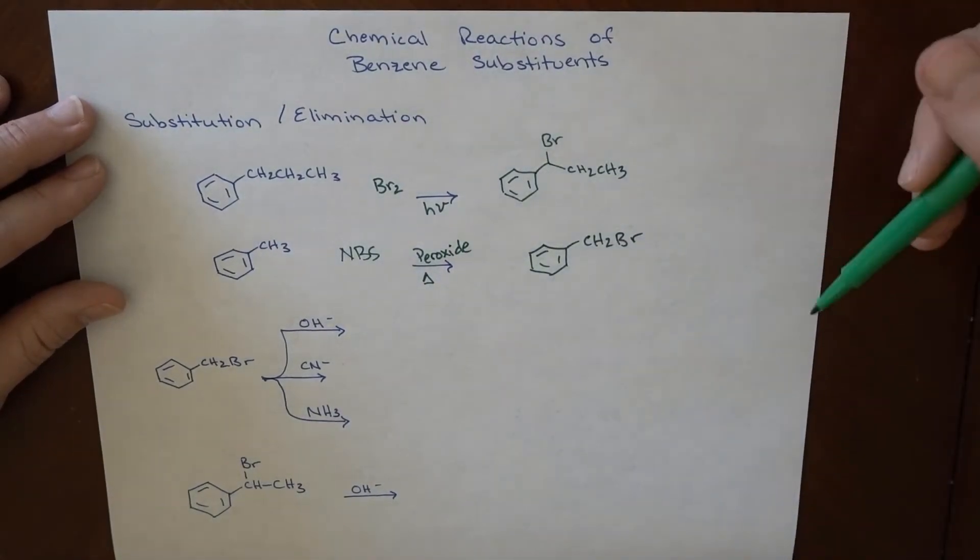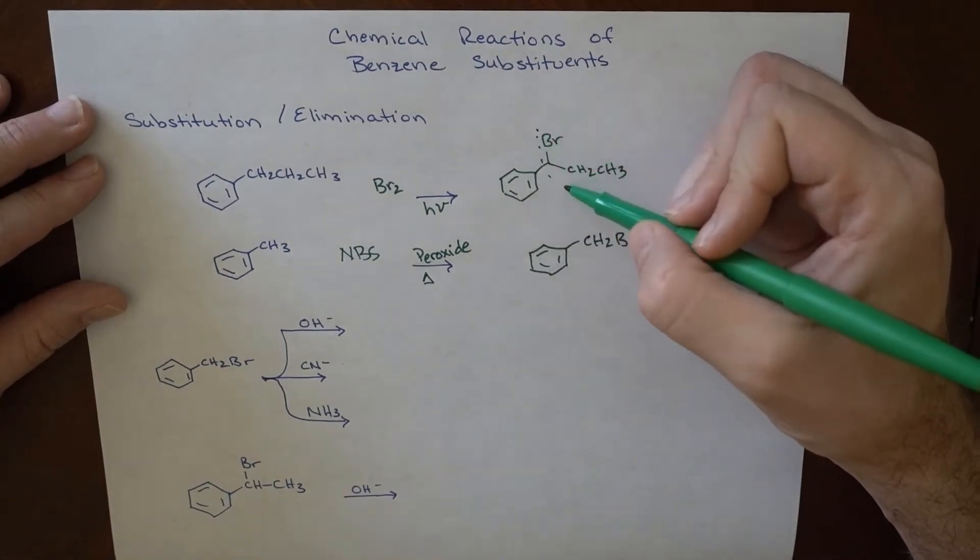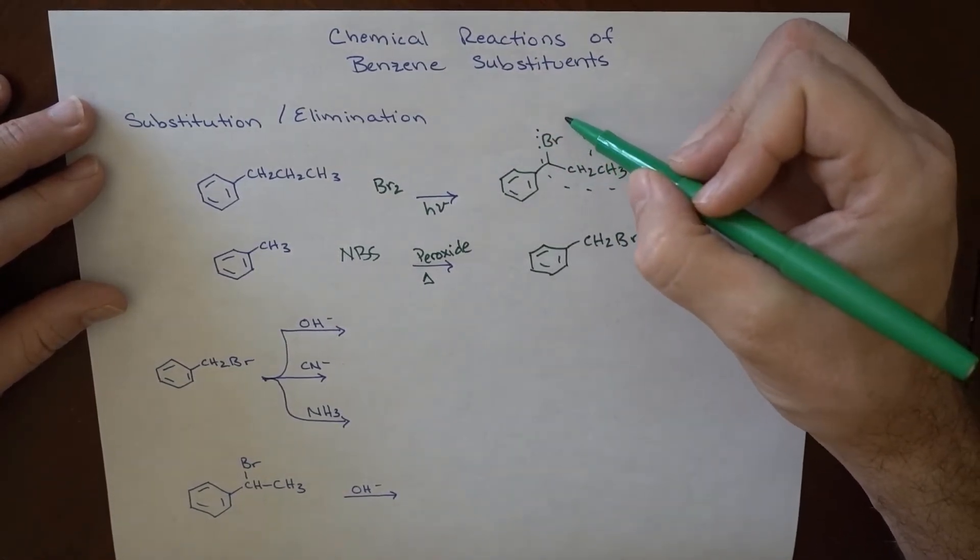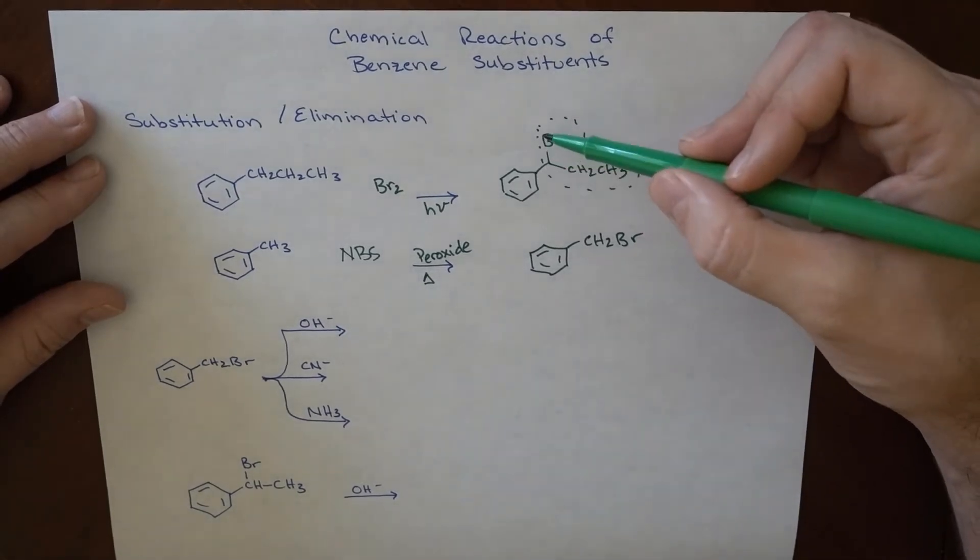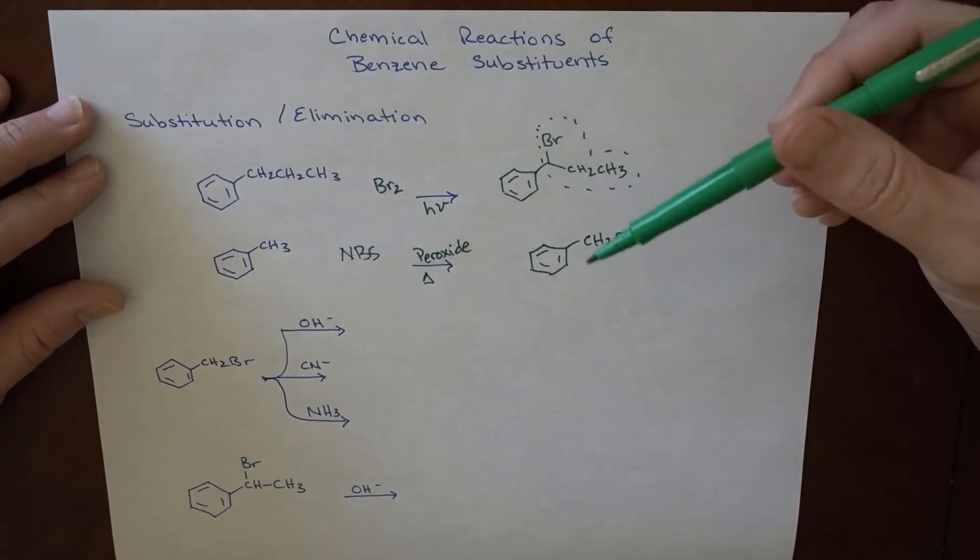So this works out pretty well, we've brominated these things, and now we can just treat something like this, and if I just circle around it, you can see we can treat this like it's a carbon chain with a bromine on it, and then we know we can do some reactions with this. So various substitutions and eliminations.